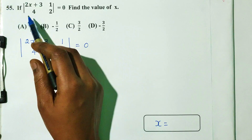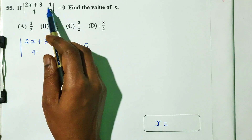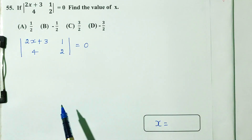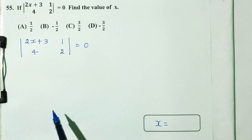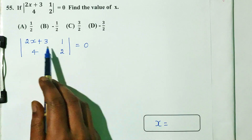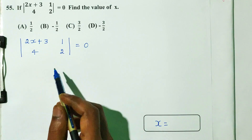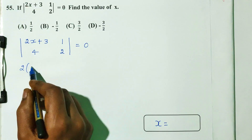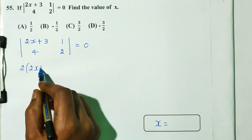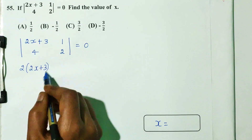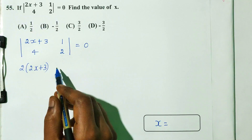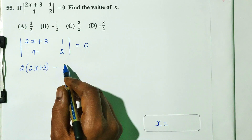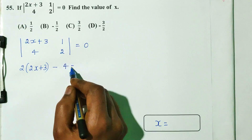Question number 55. If the determinant of the matrix: 2x plus 3, 1, 4, 2 is equal to 0, find the value of x.